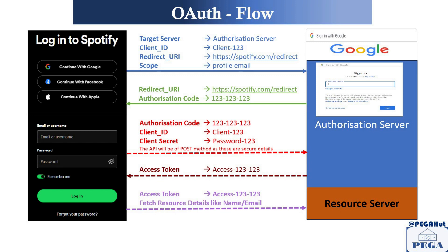The access token is confidential data and obviously has to be securely sent to Google to fetch the information. That's how Spotify goes and fetches the data from Google. This is the OAuth flow on a very high level.